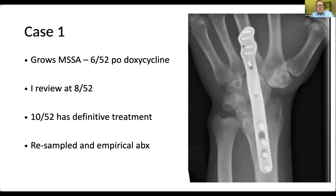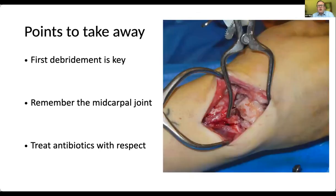At his second operation — treating him as if still infected — I resampled everything and gave a thorough debridement and lavage. Macroscopically it looked clean, so we proceeded to a wrist fusion. Post-surgically he received broad-spectrum antibiotics until we confirmed none of his samples had grown bacteria, then stopped them. The three points to take away: the first debridement is really important. Remember the mid-carpal joint — the photograph shows the head of the capitate, and you can see how quickly it was eroding away due to infection and poor carpal mechanics. And we need to treat antibiotics with respect — liaise with your microbiologists, and change antibiotics only with their advice.